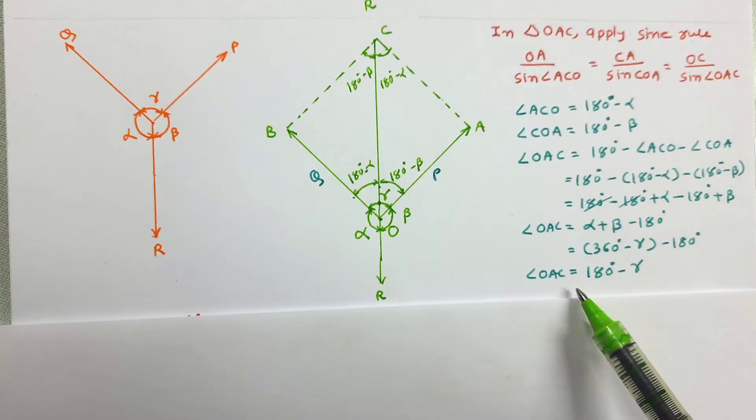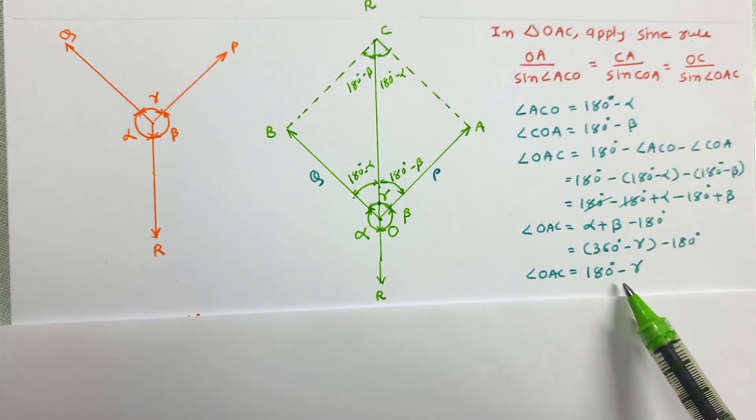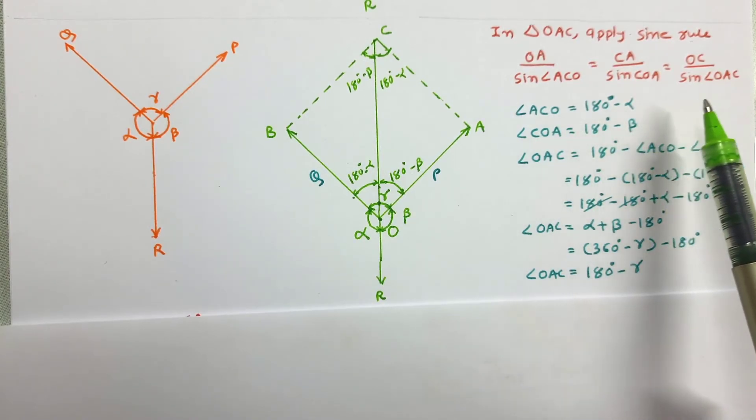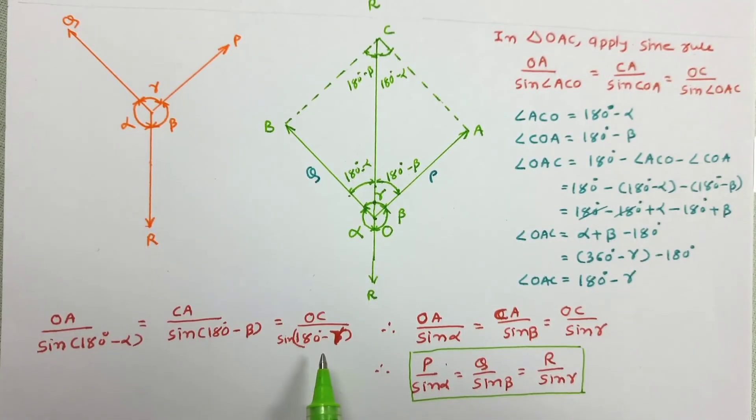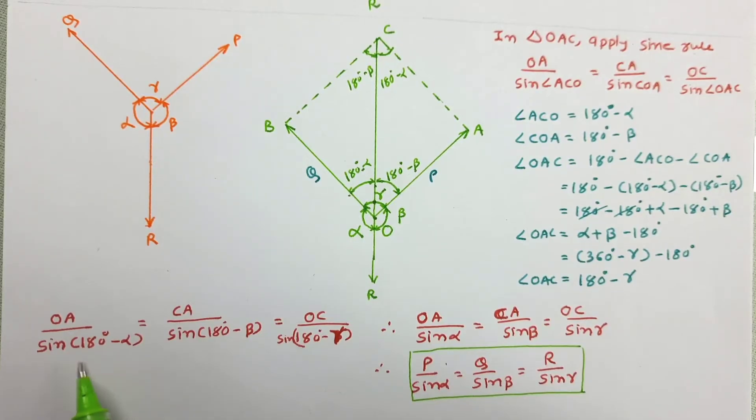Now let us substitute all these three angles in this equation. So the values of all three angles are equated in equation number one. We know that sine of 180 minus any angle, it will give sine of that angle. So here sine of 180 minus alpha, we can write sine alpha, same way sine beta and sine gamma.